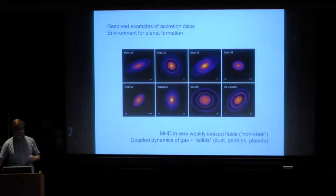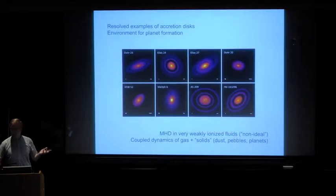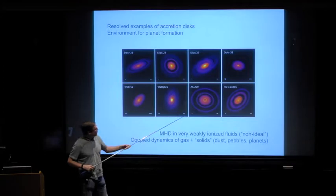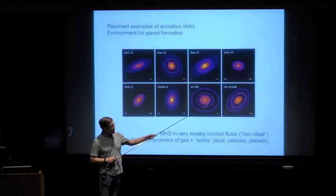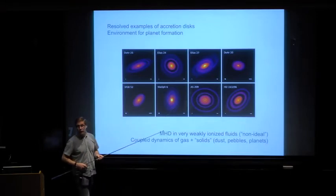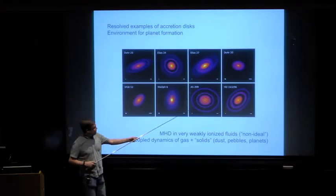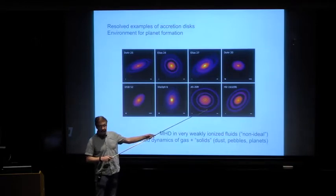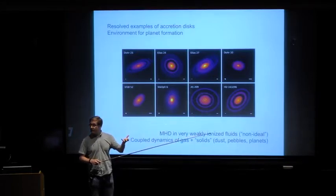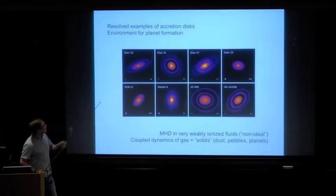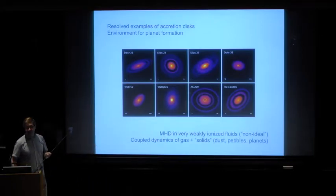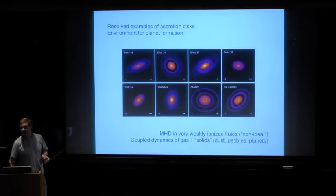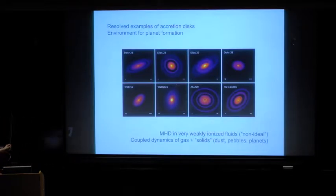The second reason you might be interested is that this is an environment for planet formation. There's a popular interpretation that the rings in particular that you see in these images are actually due to planets. The basic idea would be that somewhere in this system there's a planet, perhaps with masses comparable to Neptune in the solar system, and what you're seeing is that the planet has excited waves in this disk and is trapping dust particles in the regions between those waves. There are obviously questions about whether that's the correct interpretation, and if so, what that says about how quickly planets are forming.